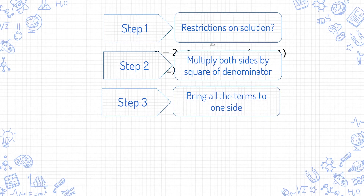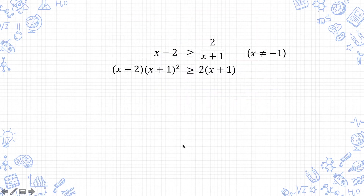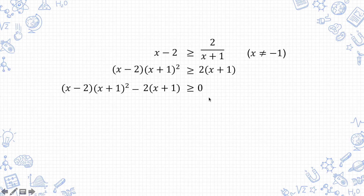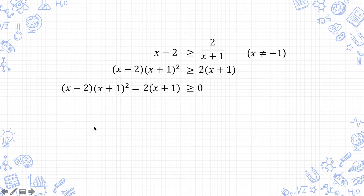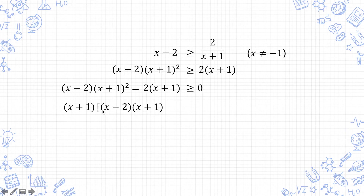Your next step is to bring all the terms to one side if necessary, so you have the left-hand side minus the right-hand side ≥ 0. You want to get 0 on one side, because then all you need to do is find the values of x for which this expression is positive or negative. To do that, your next step is to find the roots — that is, the values of x that will make this expression equal to 0. If you can, factorize the expression. Here, take out the common factor (x+1).